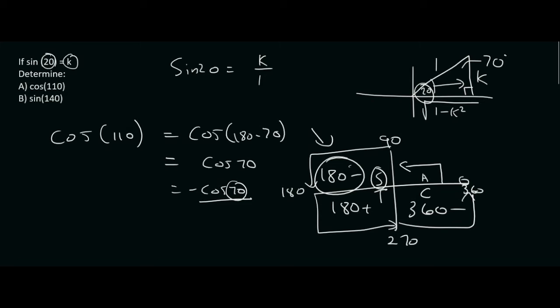So, cos 70, well we know from SOHCAHTOA that cos is adjacent over the hypotenuse. So, adjacent over hypotenuse, which is k over 1. So, the answer for that one, the answer for A is going to be equal to k over 1, but remember that there is a negative over there, so the answer is negative k over 1, or you can just say negative k.